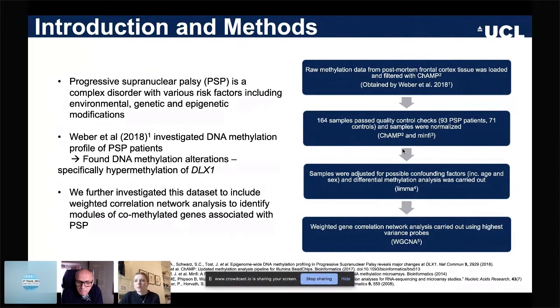After some data normalization, we adjusted for confounders such as non-neuronal cell proportions, sex, and age. We carried out our own differential methylation analysis using a slightly different pipeline, and then carried out network analysis using the highest variable probes we'd found by utilizing WGCNA, which is an R package for weighted correlation network analysis.